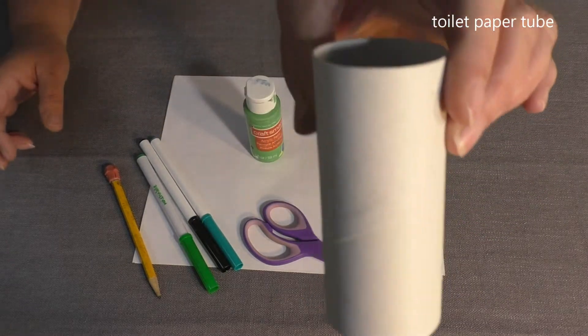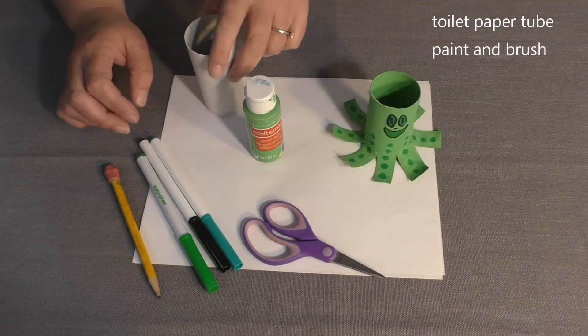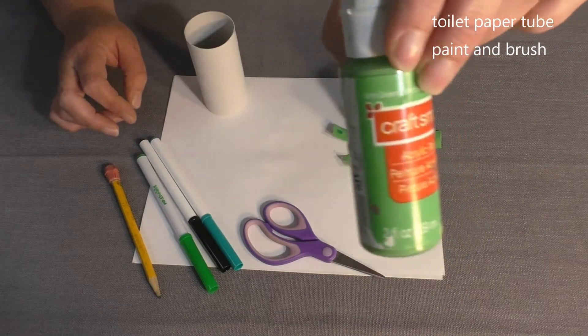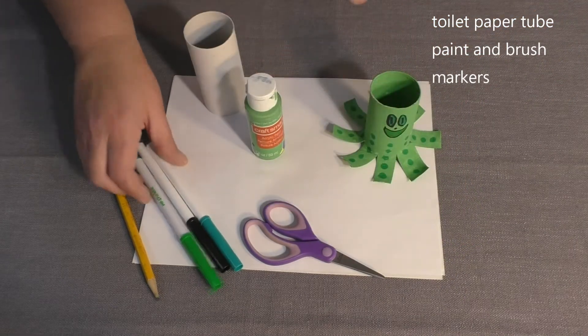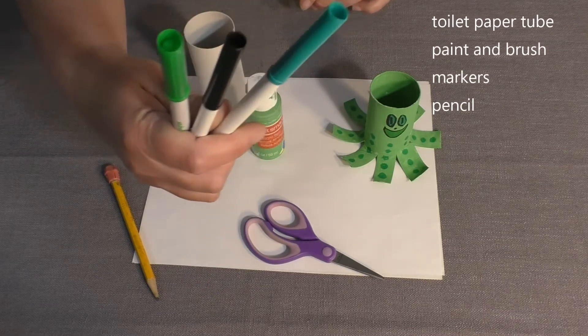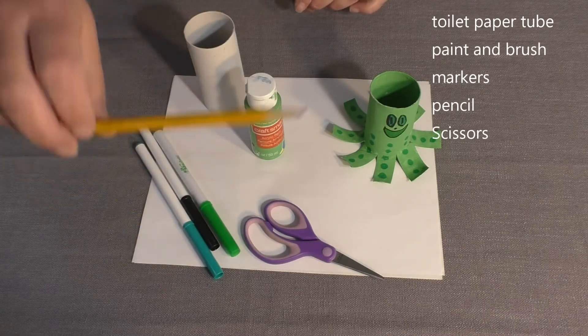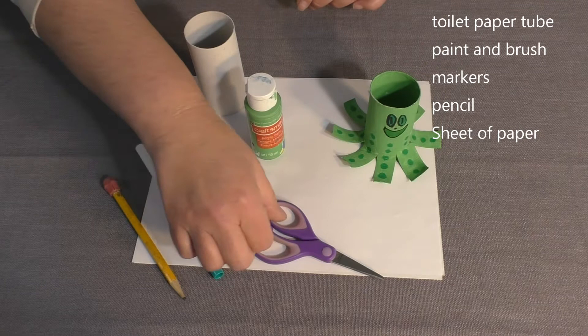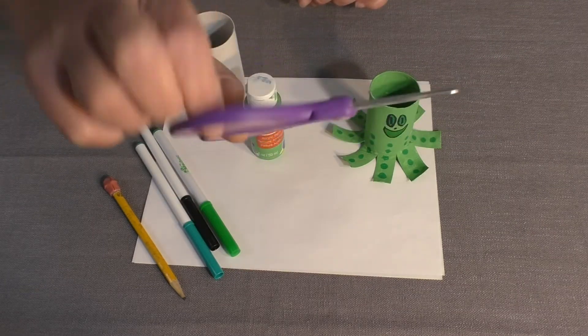You will need a toilet paper tube, one paint color of your choice and a brush, a few markers, a pencil, one pair of scissors, and of course you'll want to put down a sheet of paper or other table covering to catch the mess.